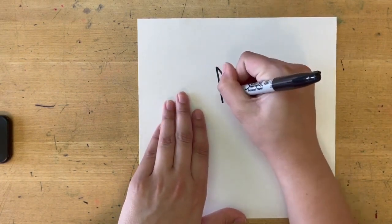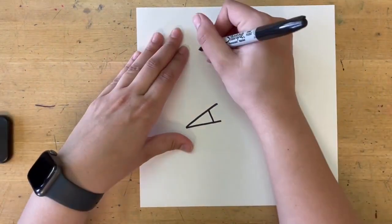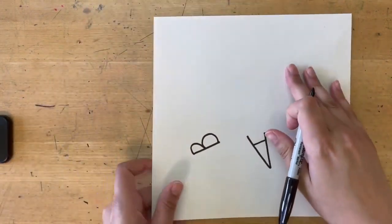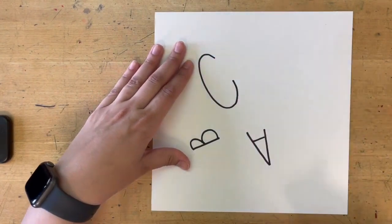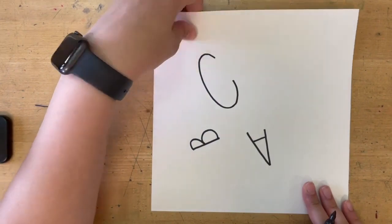So A, then I'm going to turn my paper and I'm going to do B. Turn again. I'm going to make that one big. You can change up the size of your letters if you'd like. Every letter you're going to turn.